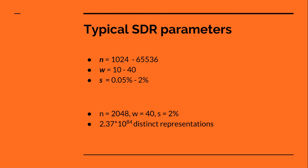This is significantly smaller than dense representations, but it's usually not a problem because the numbers typically used are much larger. The typical sparse distributed representation ranges from 1,024 to 65,000 bits. The number of active bits goes from 10 to 40, giving a sparsity range of 0.05% to 2%. For example, an SDR with 2,048 total bits and 40 active bits gives a sparsity of 2% and a total of 2.37 times 10 to the 84 distinct representations — which is astronomical.